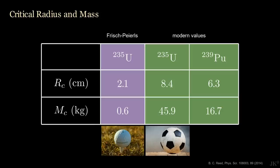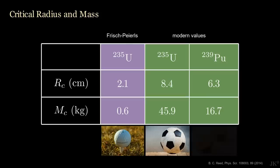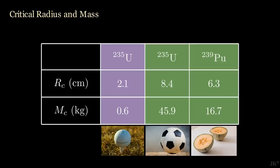Similarly, for plutonium-239, one finds a critical radius of 6.3 cm, about the size of a cantaloupe, with a critical mass around 17 kg.